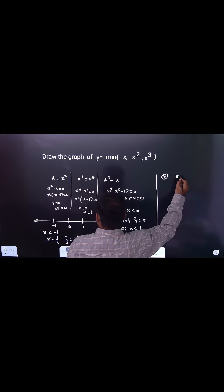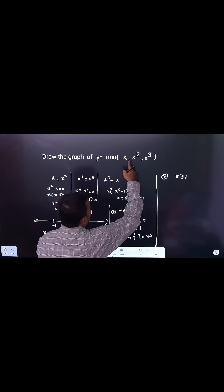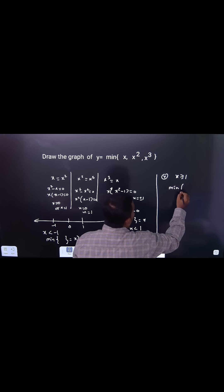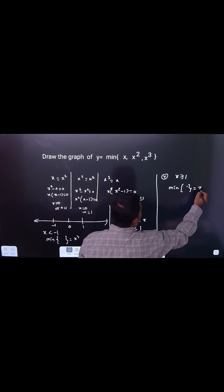The fourth one, which is x is greater than 1. Let's take 2, 4, 8. So x is the minimum. Minimum here is x.